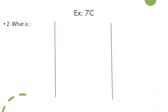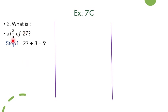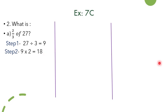Now you have exercise 7c about finding fractions of a number. Let us try some questions. The first question is: what is 2 by 3 of 27? Step 1 is dividing 27 by 3, giving us the quotient 9. Step 2 is multiplying the quotient with the numerator: 9 twos are 18. So 2 by 3 of 27 is 18.